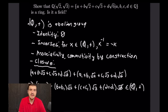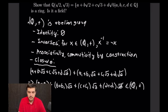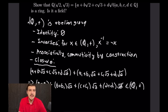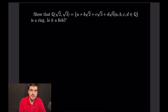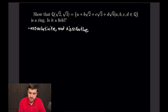Since we have identity, inverses, associativity, commutativity, and closure, this is an abelian group — proving the first ring requirement. For multiplication: associativity and distributivity are inherited from ℝ, since this set lives inside ℝ. So we just need to check closure under multiplication.